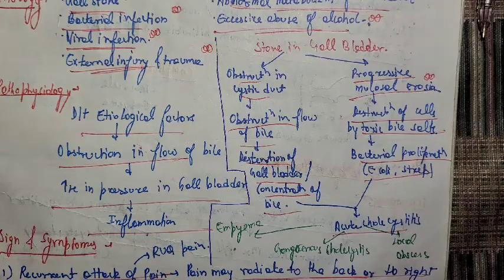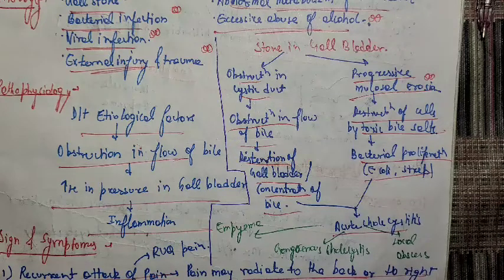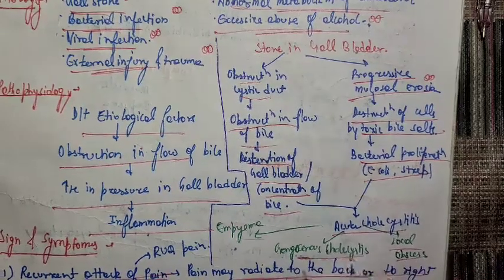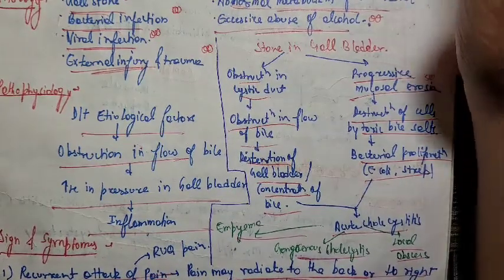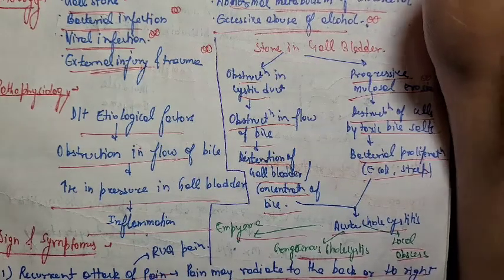With ongoing cholecystitis infection, complications can develop. It can become empyema of the gallbladder. Or it can become gangrenous cholecystitis, which involves impaired blood supply leading to gangrene. It can also result in a local abscess. So the main complications are: empyema, local abscess, and gangrenous cholecystitis.